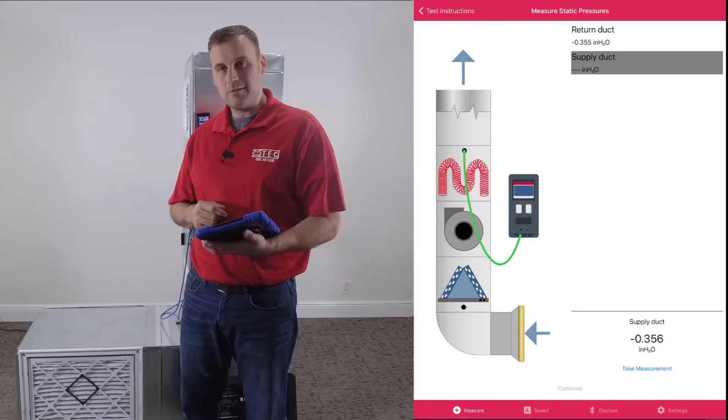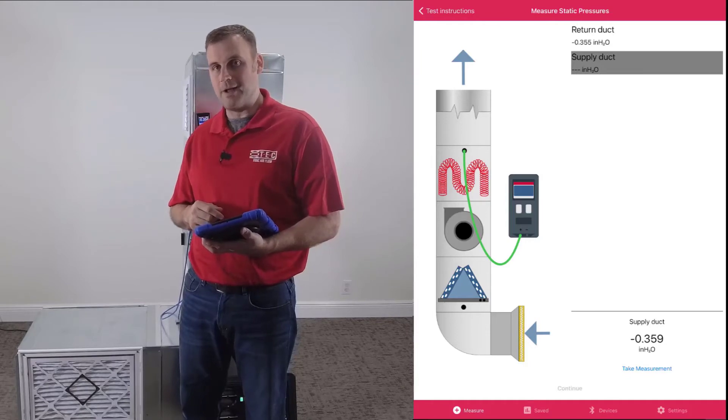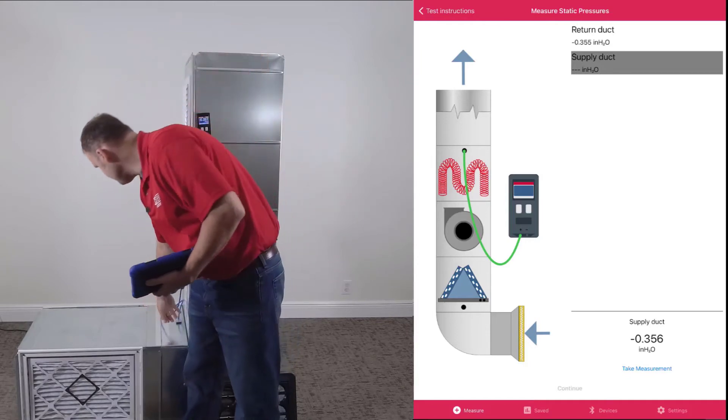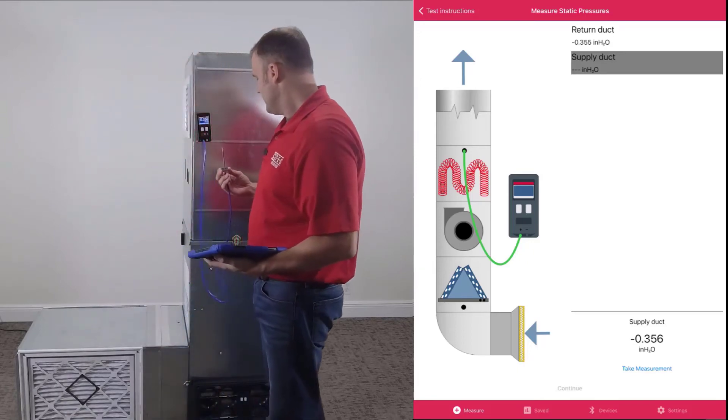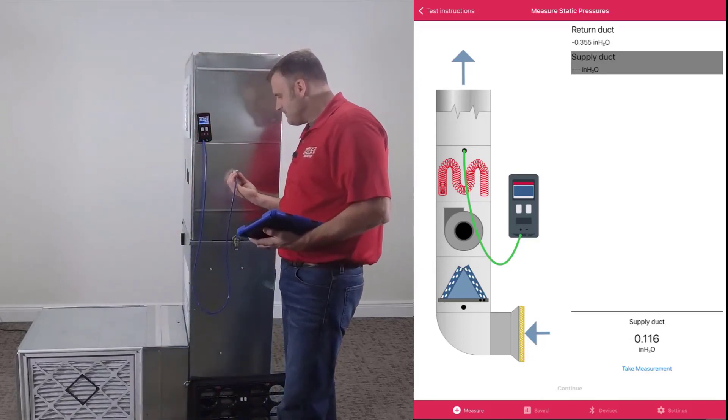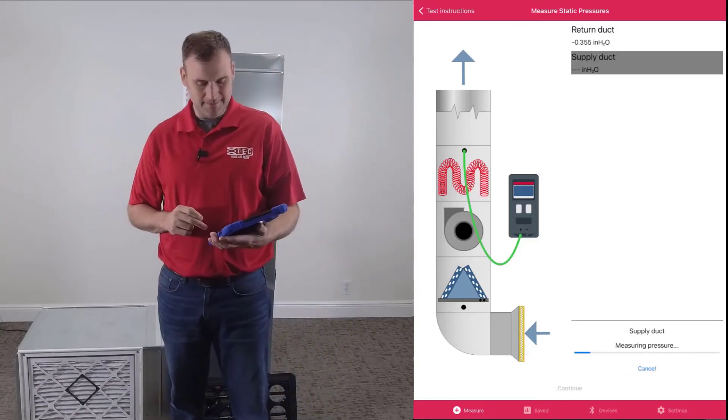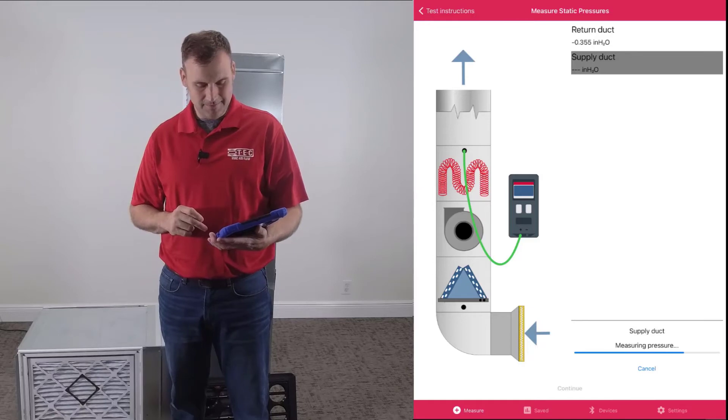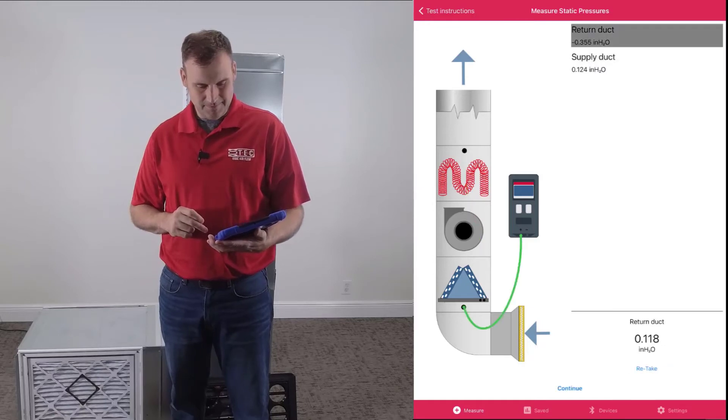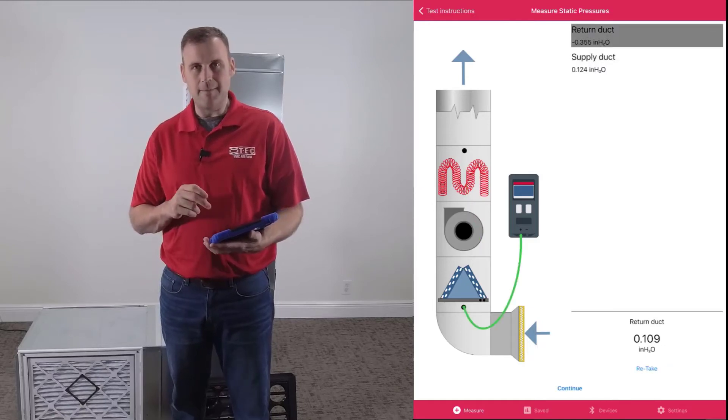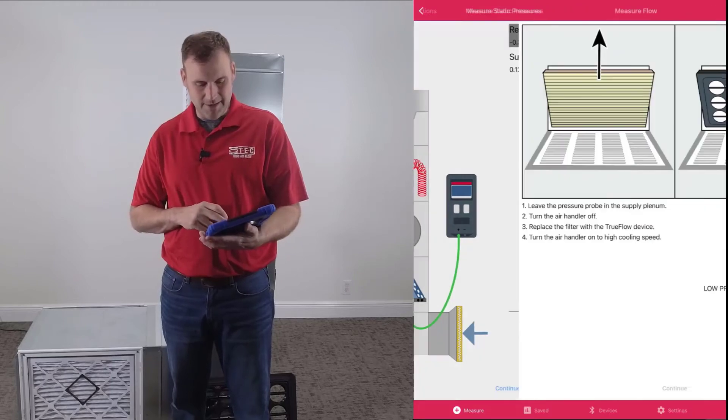Now you'll notice the screen is telling us let's go ahead and capture the supply static pressure measurement. Take that static pressure probe, put it in the supply plenum. We click take measurement, wait a few seconds. I'm happy with those measurements. Let's click continue.